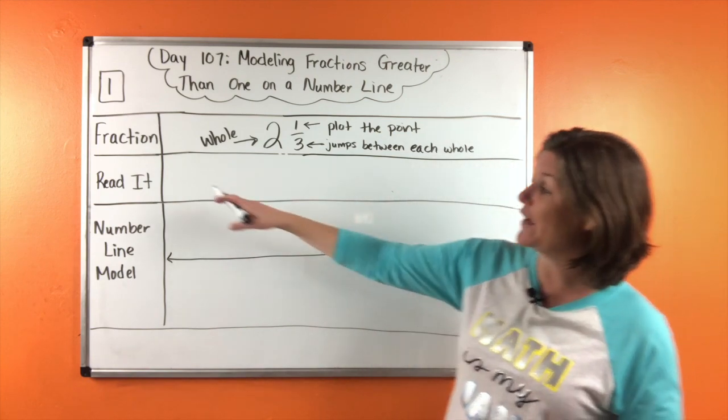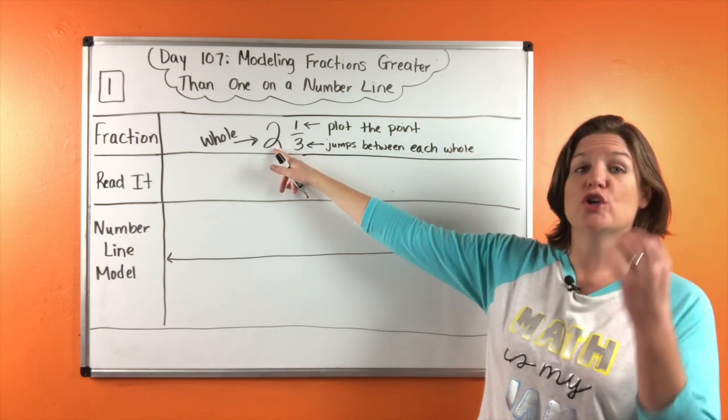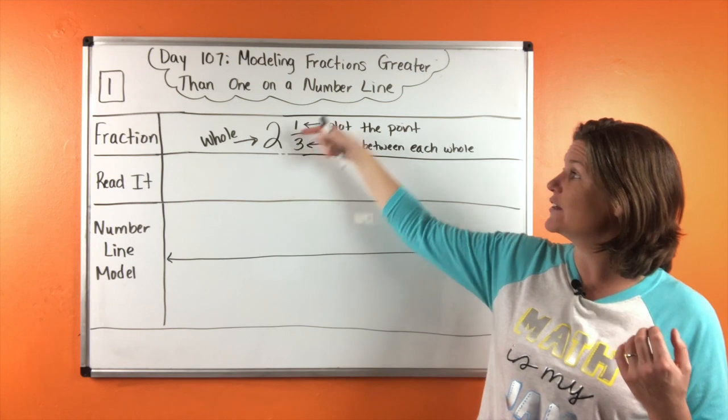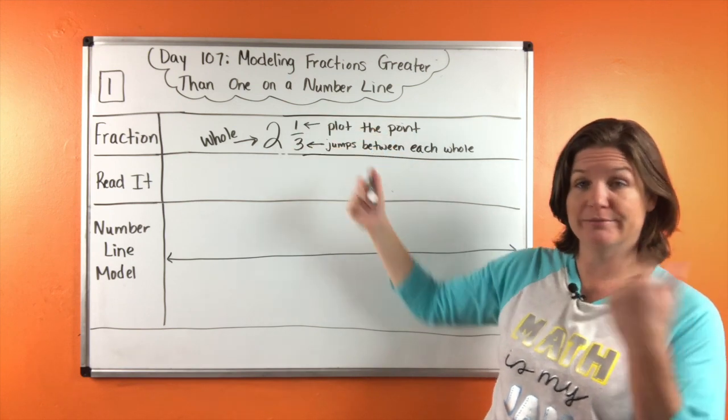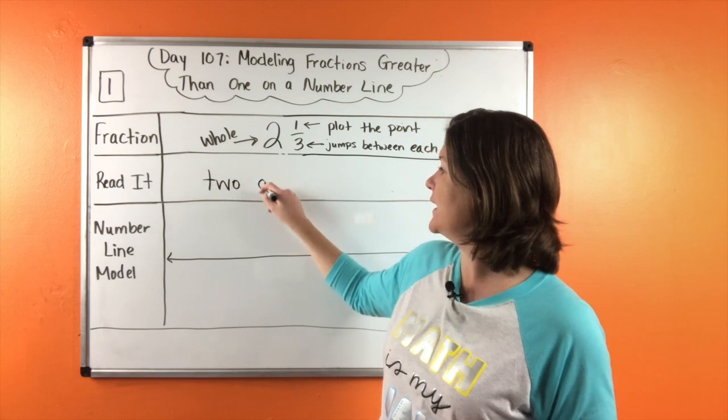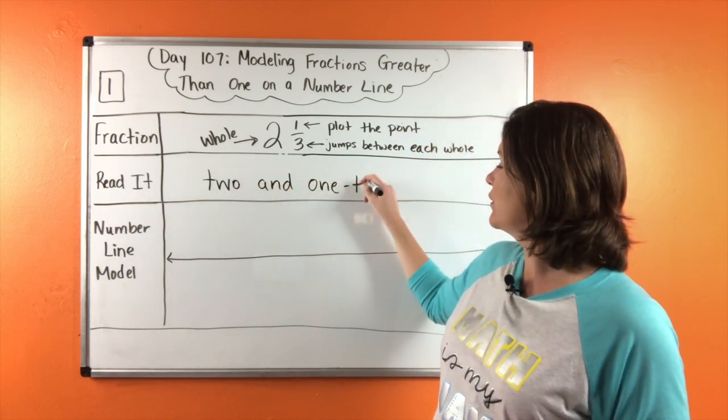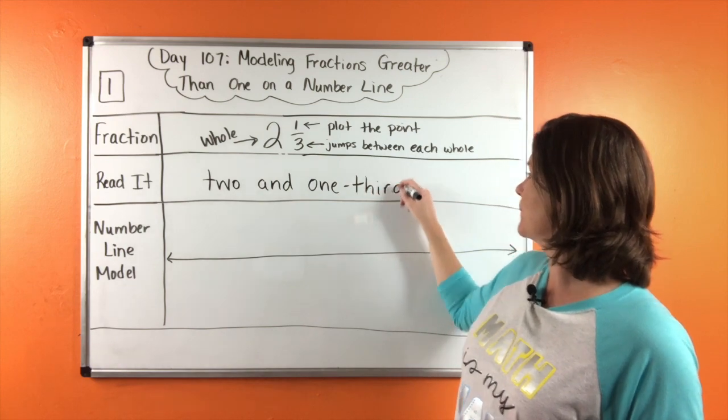Alright, so now we're going to go ahead and read it. So read this mixed number with me. We have two and one third. Let's write it. Two and one third.